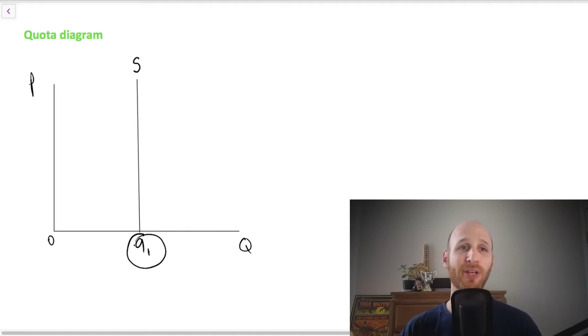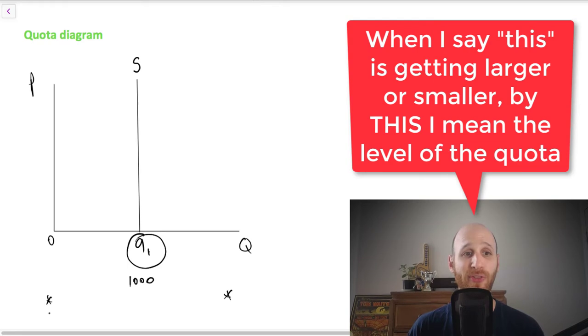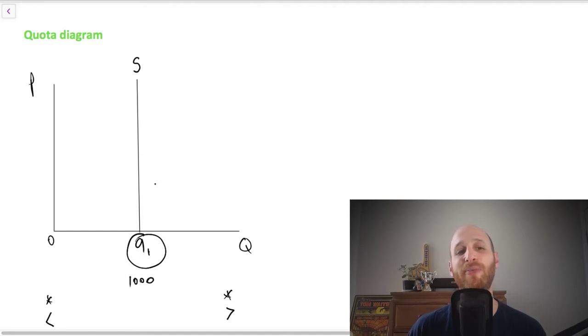So what the government can do is it can change the quota. It can change the number of imports that are let in. So for our purpose, let's just say that this is 1000 and this is closer to zero and this is further away. So this is getting smaller, this is getting larger. Let's say that the government wants to increase the level of imports it's letting in.